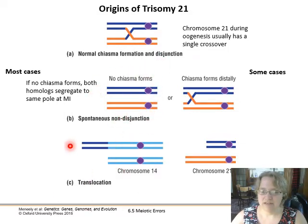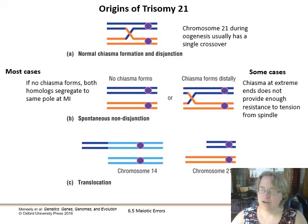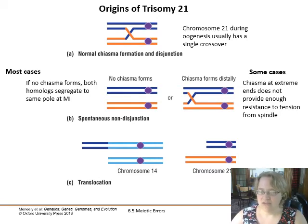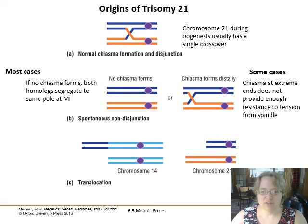Alternatively, if there's a distal chiasma — one that forms really far away — it doesn't have enough resistance to the tension of the spindle. So the homologues are pulled together to the same pole of the cell. That's how you get trisomy 21, but it's not inheritable. If that person reproduces, they will have normal gametes and it's not a genetically inherited disorder.